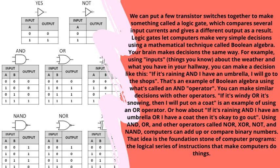We can put a few transistor switches together to make something called a logic gate, which compares several input currents and gives a different output as a result. Logic gates let computers make very simple decisions using a mathematical technique called Boolean algebra. For example, using inputs about the weather and what you have in your hallway, you can make a decision like: if it's raining AND I have an umbrella, I will go to the shops — that's Boolean algebra using the AND operator. Similarly, using the OR operator: if it's windy OR it's snowing, I will put on a coat.